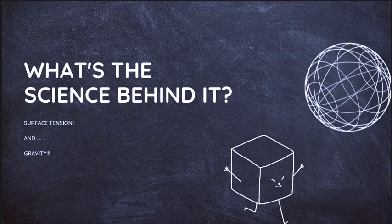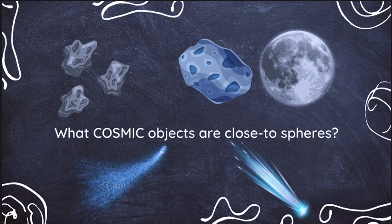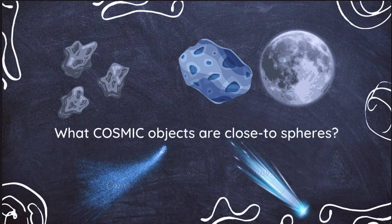But not all objects in space are spherical. They don't have enough mass to actually form into spheres. Like Phobos and Deimos and our moon, comets and asteroids. They don't have enough mass to actually form into perfect spheres.